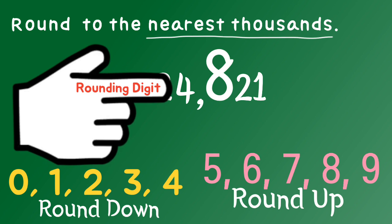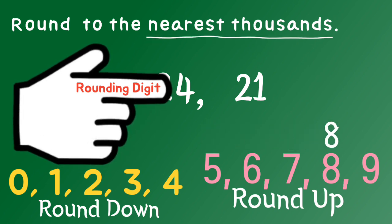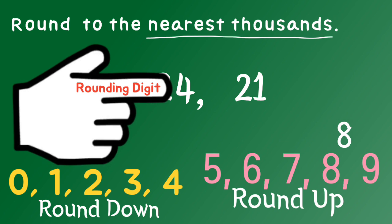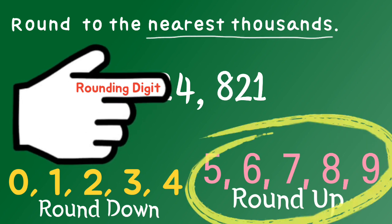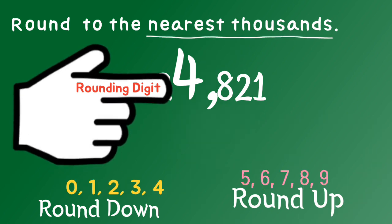But when the next digit to the right of the rounding digit is either 5 or more — like 5, 6, 7, 8, or 9 — then we round up by adding 1 to the rounding digit. That is, round up — it will become 5.